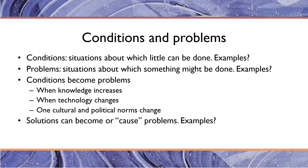Sometimes things that we say government can't do anything about evolve into things that government can do something about. Those periods in our history where government has been particularly activist — like the New Deal or the Great Society programs of the 1960s — were times in which problems that may have once been defined as conditions were defined then as problems that government could do something about.